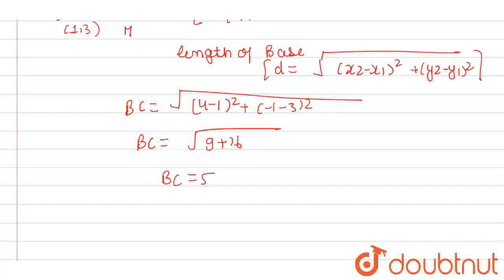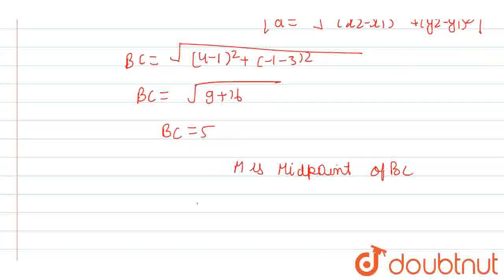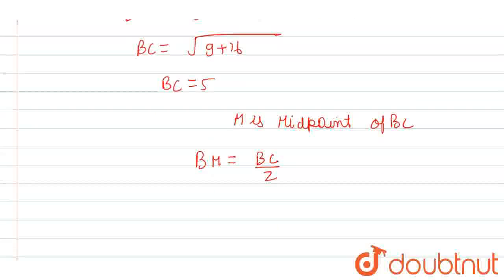Now, we know that the altitude divides the line into two parts, meaning M is the midpoint of BC. Therefore, BM = BC/2 = 5/2.